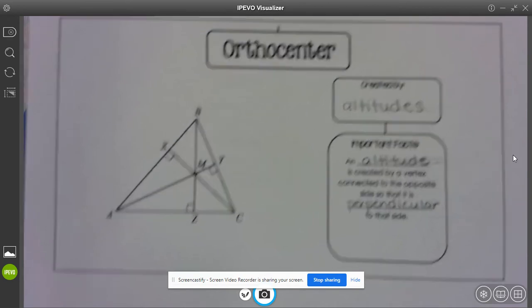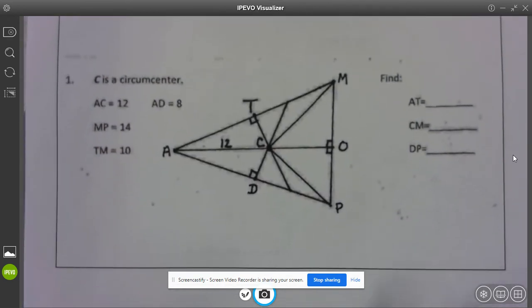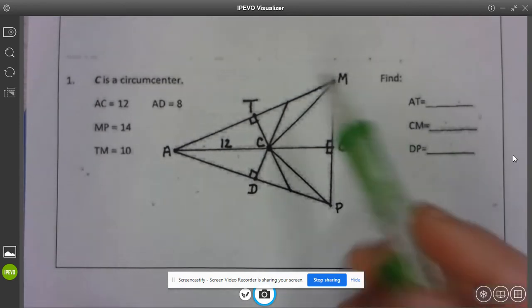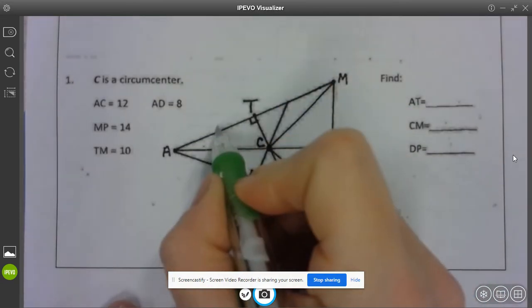Alright, let's try some example problems. Alright, so C is a circumcenter, which means I have perpendicular bisectors. So that means we're going to be dealing with some congruent sides.